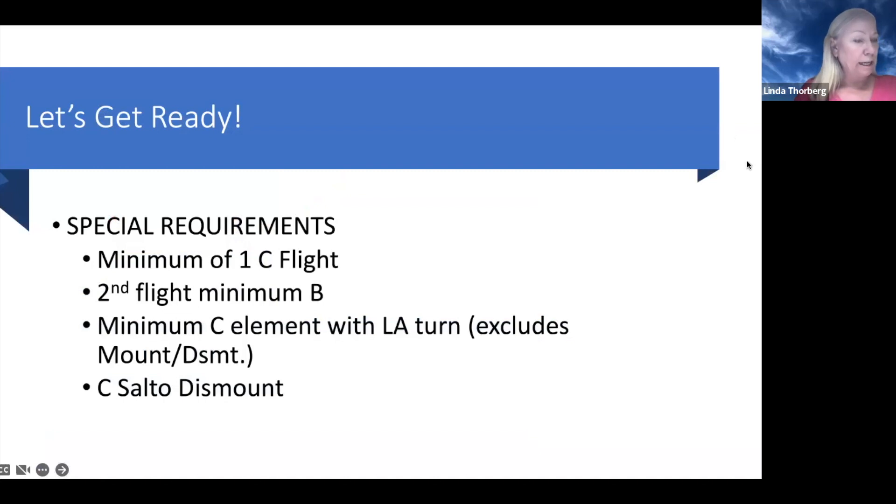Our special requirements, level 10, we need a minimum of one C flight skill, a second flight skill at least a B, and then a minimum of a C turn. It could be an LA turn, could be a giant half, could be a bale that has a half turn over the low bar, anything that has a long axis turn. It doesn't have to be a salto, so a C element. You can't use the mount or the dismount in that particular requirement, and then a C salto dismount.